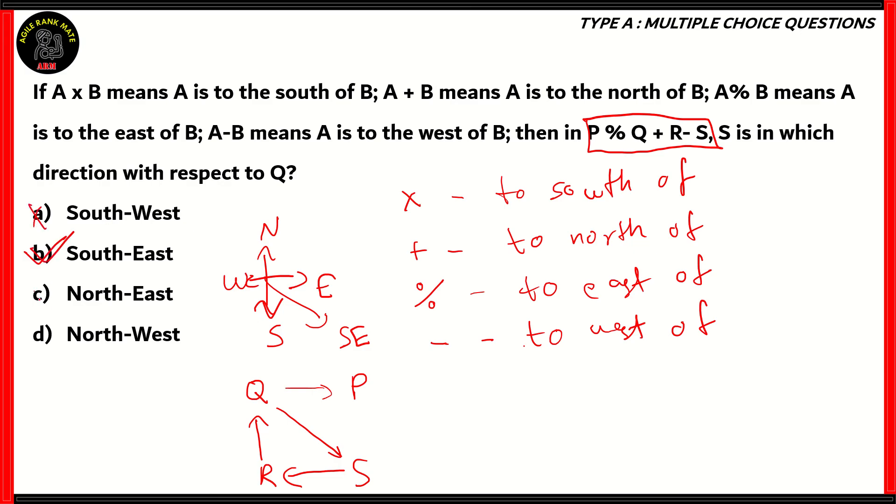Options A and C are incorrect because southwest means here and northeast means there. Option D, northwest could have been correct if they asked the direction of Q with respect to S. But however, it's the other way around here. So therefore, northwest is also incorrect. The right answer is option B, S is to the southeast of Q.